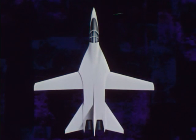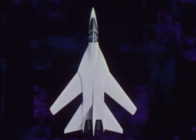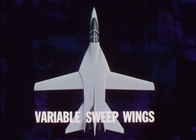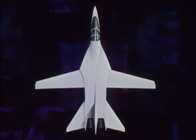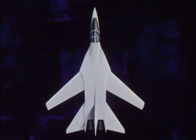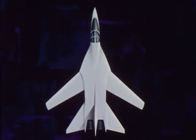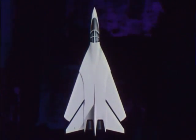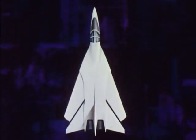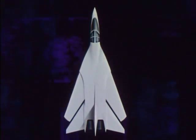To build airplanes that perform well at any speed, aeronautical engineers have designed wings which are movable, called variable sweep wings. At low speeds, the wings are spread out straight. As the airplane moves faster, the wings are swept back until at very high speeds, they sweep all the way back to form delta wings. So no matter how fast the plane is flying, its wings form the best possible shape for that speed.